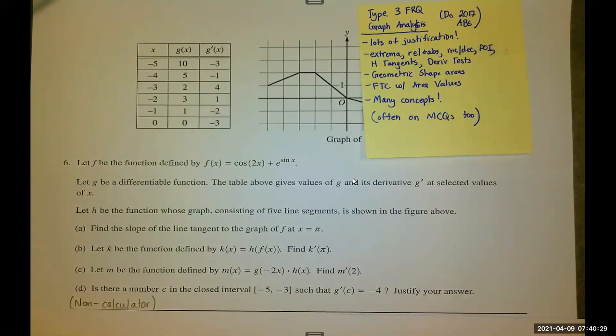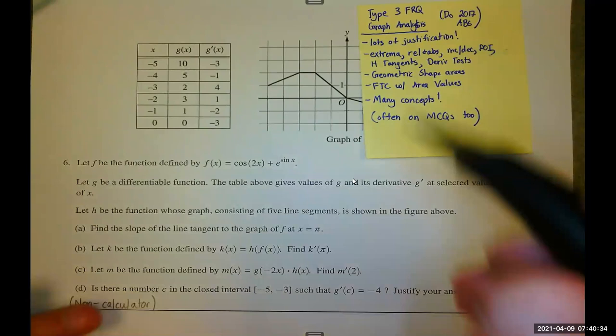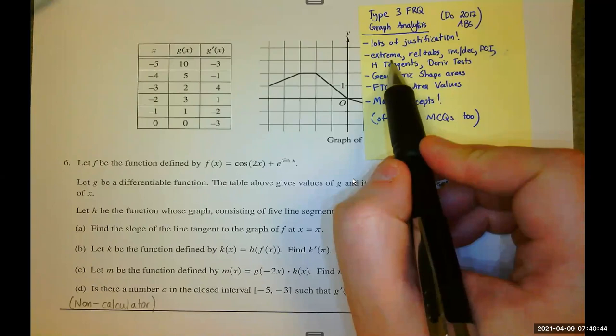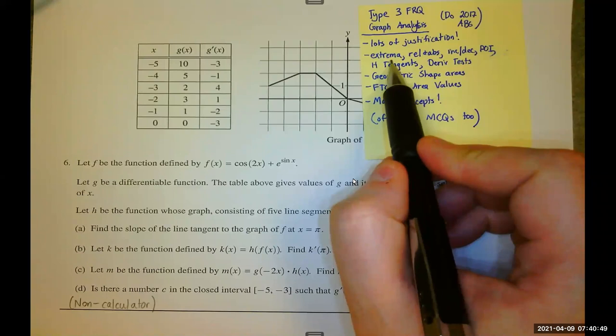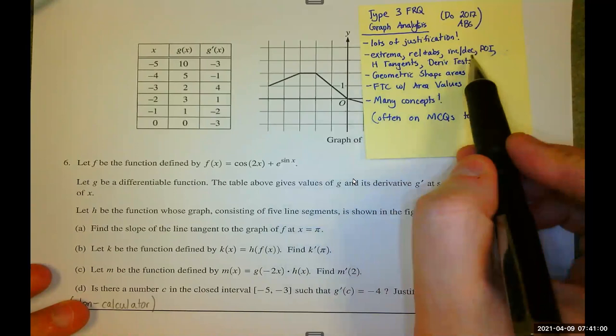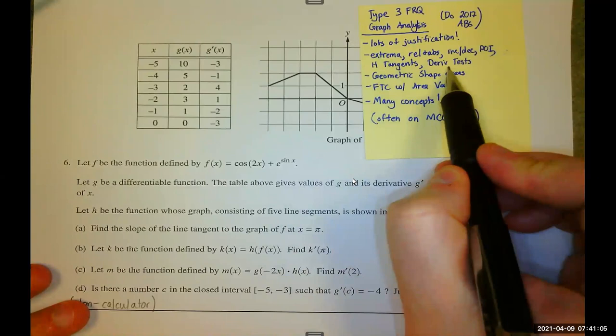Topic three, graphical analysis, tons of justification. All of that stuff we talked about with extrema, the sign change in the first derivative, the second derivative test, a critical value, not a critical value. A slope of zero with a positive or negative second derivative indicating concavity and a relative minimum or maximum respectively. Relative or absolute extrema, increasing and decreasing functions, points of inflection, horizontal tangents, the derivative test already mentioned. All of these things can happen here.